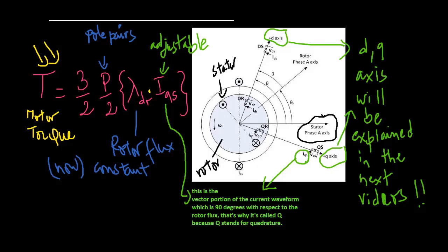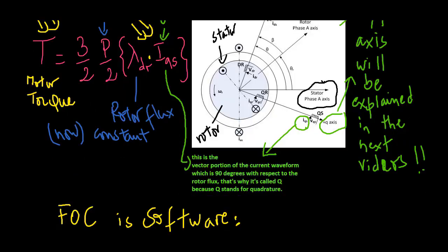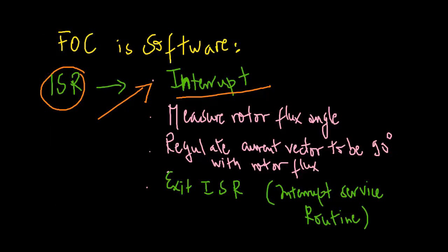In the next video we will show that the torque is calculated with a specific expression. The component IQ is the current component that controls the motor torque. To do field oriented control on a digital processor, we get an interrupt service routine, go out and measure the rotor flux angle using sensor or sensorless techniques, then regulate the current vector to be at 90 degrees with respect to the rotor flux by adjusting the three stator phase currents. This is done approximately 10,000 times a second — every 100 microseconds we check the new angle of the rotor flux, recalculate the three currents to be exactly in quadrature, and then exit the interrupt service routine.